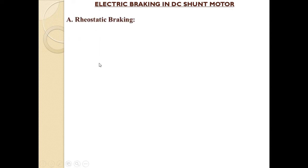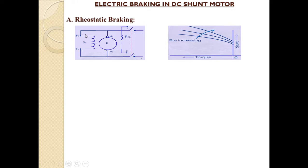Now we need to know about electrical braking in the DC shunt motor. These three types of braking are applied in both DC shunt and DC series motors. Look at the circuit diagram of rheostatic braking in a DC shunt motor — the input terminals are disconnected from the supply and connected with a variable resistance. Looking at the graph, torque is on the negative x-axis and speed on the positive y-axis. The resultant line is drawn in the second quadrant, which is called the forward braking quadrant.